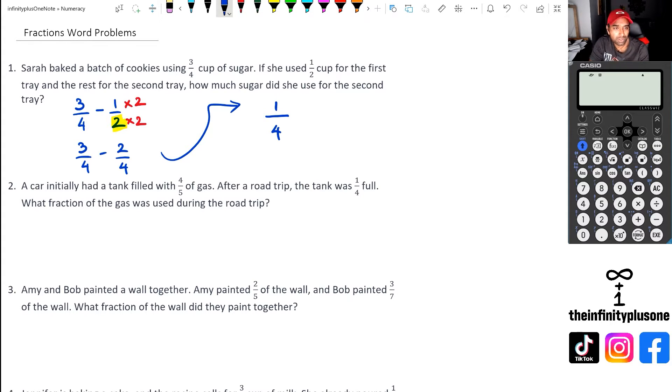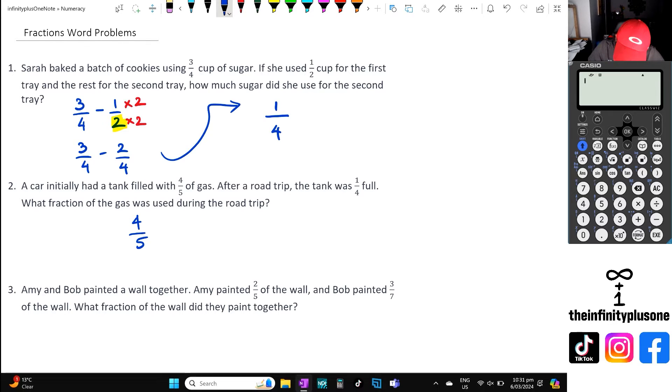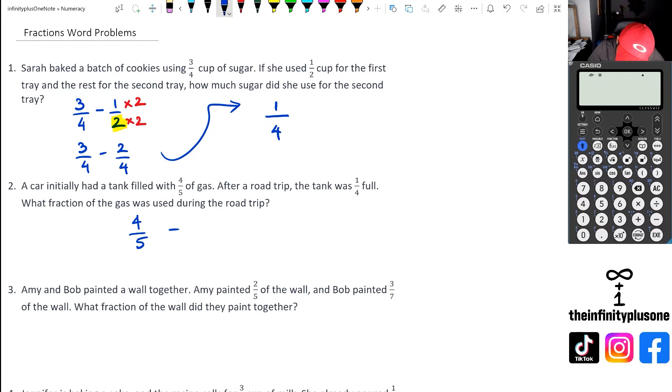Looking at question two, we've got a car that's got four fifths filled with gas, so that's 4/5. And what we've got is after a road trip, the tank was a quarter full, what fraction was used for the road trip. So we've got 4/5 minus 1/4. And once again, what we've got to do is we've got to look at the lowest common multiple between five and four, because for these two particular fractions, the denominators are not the same. So we know the lowest common multiple is 20. So I'm going to multiply the denominator by four here and the numerator by four. And as for the quarter, I'm going to multiply it by five and the numerator by five. So when I do this, I am going to get 16/20 take away 5/20. And carrying on here, now because the denominators are the same, I can put that as 20. And then 16 take away five is going to be 11.